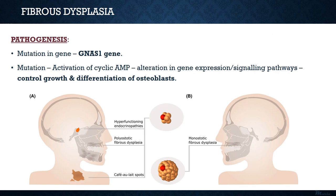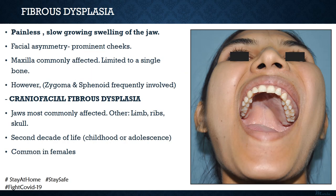Fibrous dysplasia is a developmental pathology. Bone development is genetically determined, resulting in osteoblast expression and bone formation. In this pathology, a genetic defect involving the GNAS1 gene affects the differentiation of osteoblasts, resulting in bone of poorer quality. The bone in fibrous dysplasia shows replacement of normal bone by fibrous tissue. Clinically, fibrous dysplasia presents as a painless, asymptomatic, slow-growing swelling of the jaw.